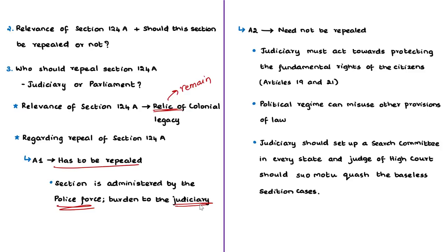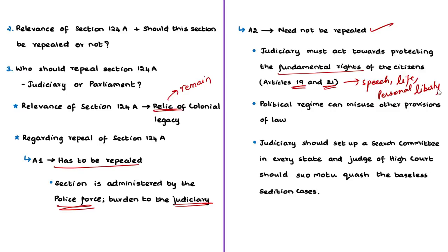The other author thinks the section need not be repealed. She suggests that the judiciary should act to protect fundamental rights — Article 19 (freedom of speech) and Article 21 (protection of life and personal liberty). If this section is repealed, the government could misuse other IPC sections like criminal conspiracy. Instead, she suggests the judiciary set up a search committee in every state, with High Court judges empowered to quash baseless sedition cases on their own. These are the opinions of the advocate authors regarding Section 124A.